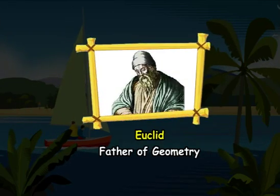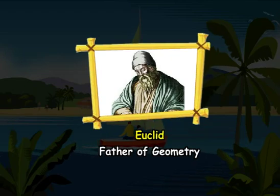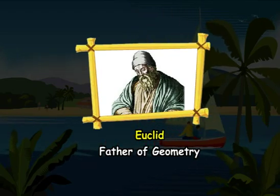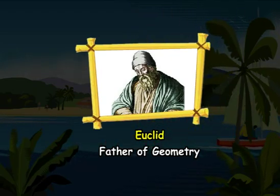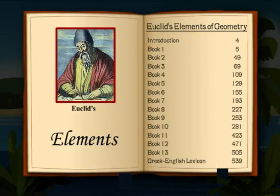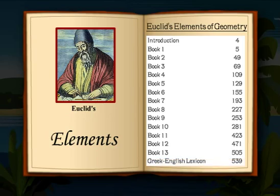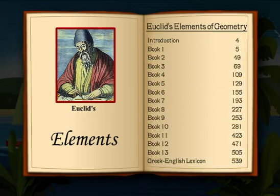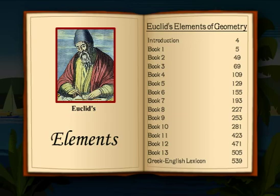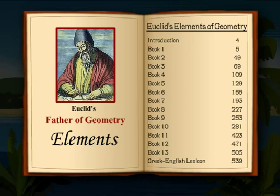Euclid, a teacher of mathematics in Egypt, assembled almost all the known work of plane geometry and 3D geometry in one book called Elements. It has been divided into 13 chapters, each called a book. Elements contains almost everything you can know about plane geometry, spheres, cones, and other 3D figures.